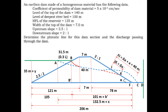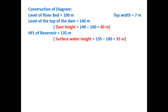Based on the river bed we can find the top level as 40 m, and the HFL of the reservoir is 135 m, which can be considered as 35 m height above the bed level. In the given figure all the details are worked out by means of various lengths from one point to another. Dam height is calculated as 40 m and surface water height is 35 m.